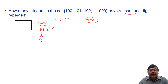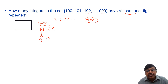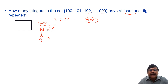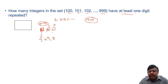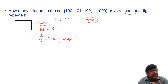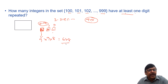For the units place, there are 10 digits available but the two digits used in the hundreds and tens places cannot be reused, so 8 options remain. The total number of three-digit integers with all distinct digits is 9 × 9 × 8 = 648. So out of 900 numbers, 648 have no repeated digit.